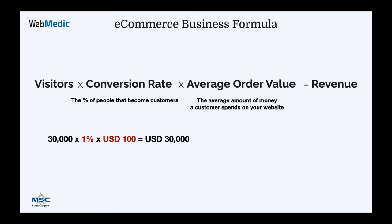On the right side, this business has the same number of visitors but small improvements: conversion rate from 1% to 1.8%, and average order value from $100 to $150. They make more than double the money with the same number of visitors. When you spend more on advertising, you lower your profit margins. But if you improve your online store and focus on conversions and average order value, you could have higher ROIs with the same number of visitors — and that's very important.